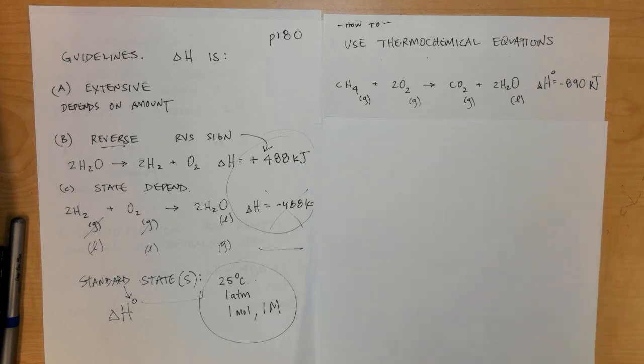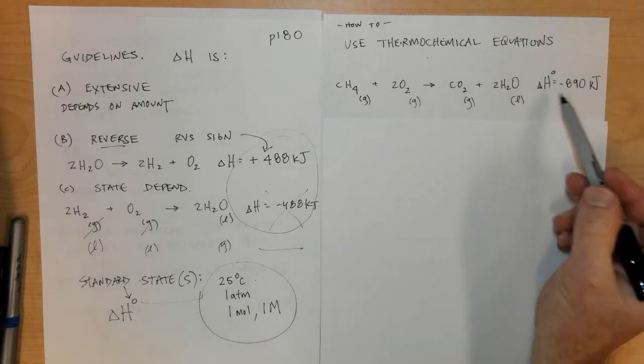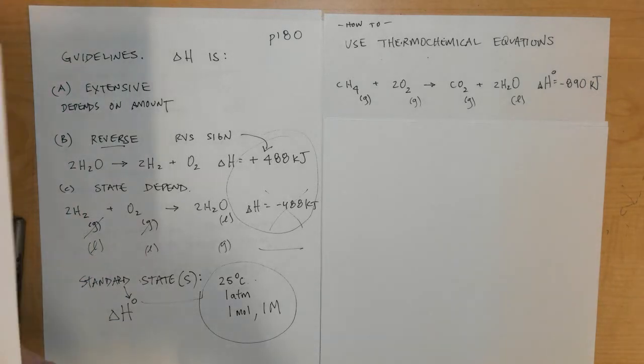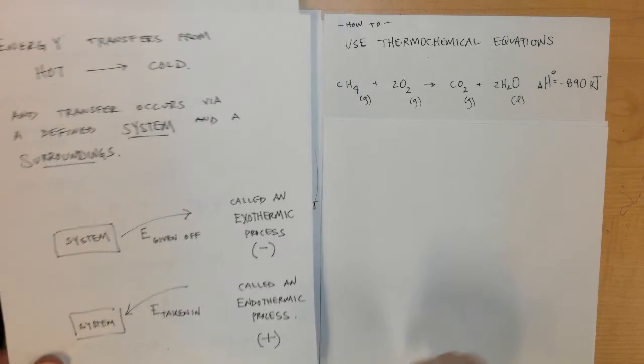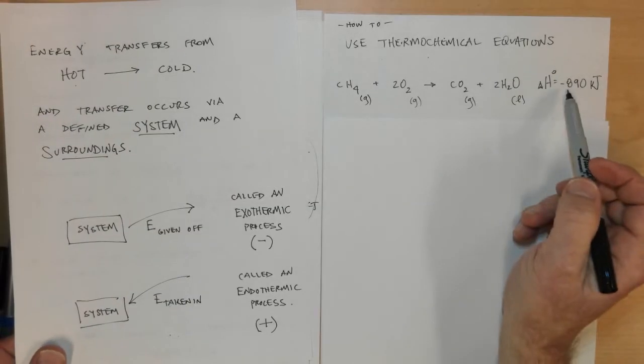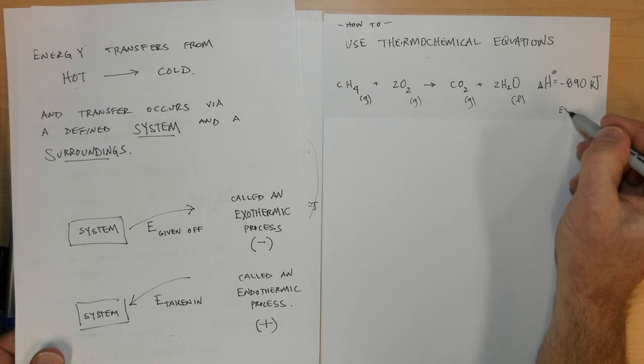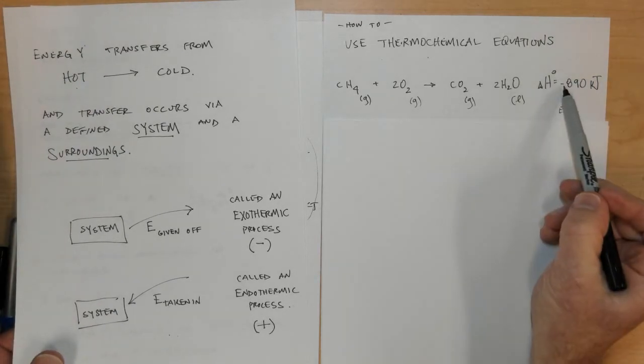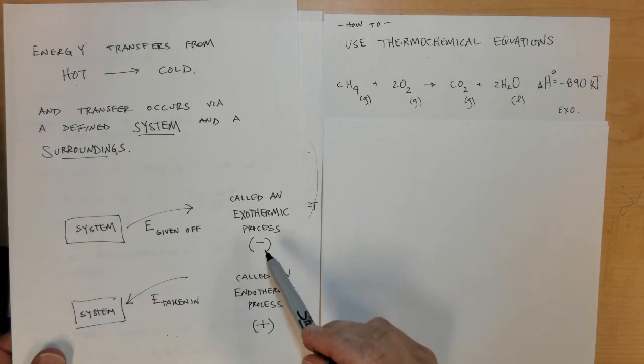We'll assume this is enthalpy in standard conditions, delta H with a little circle, and the enthalpy for this process is negative 890 kilojoules. First, is this process endo or exothermic? Looking back at your notes, if it's a negative process, it's exothermic.